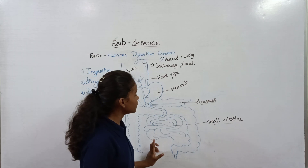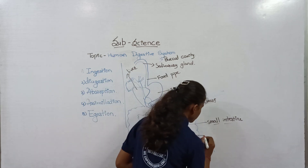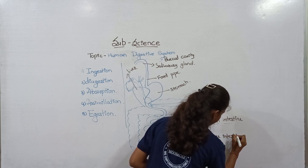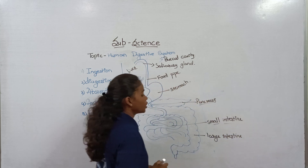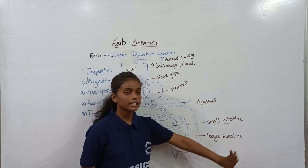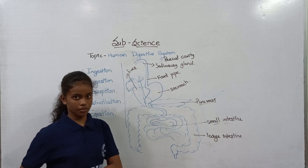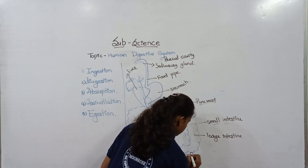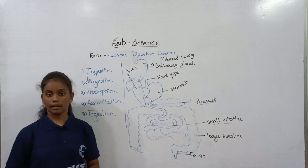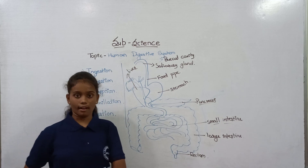The small intestine transfers the remaining food to the large intestine. The large intestine absorbs water from the undigested food and transfers the undigested food to the rectum. The rectum is the storage place for undigested food.